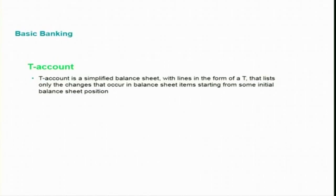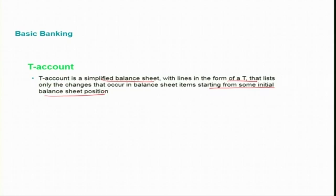We have covered the different components of the bank's balance sheet — the asset side and the liability side. In this session we will focus on basic banking, and we will be explaining this using a T-account. A T-account is a simplified balance sheet with lines in the form of a T that lists only the changes that occur in the balance sheet items, starting from some initial balance sheet position.